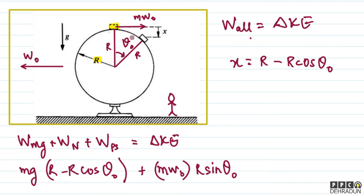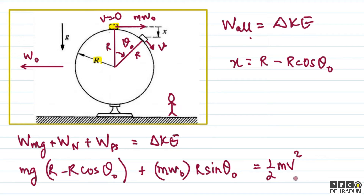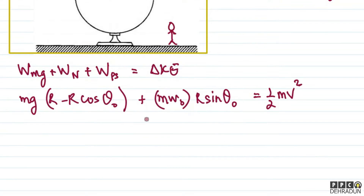Initially, when the pseudo force just started acting, the speed was zero (v = 0 at start). At the moment of break-off, let the speed be v. So the right-hand side equals the change in kinetic energy = half·m·v², since initial kinetic energy is zero and final kinetic energy is (1/2)mv². This gives us our first equation from the work-energy theorem.